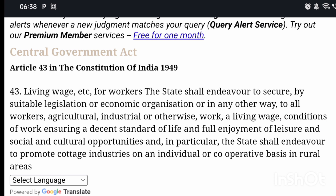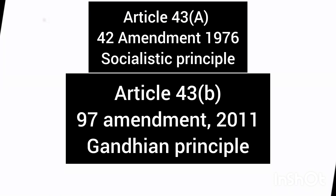1976 में 42nd Amendment में Article 43A को add किया गया, जिसमें कहा गया कि workers का participation बढ़ाना है industry के management में। ये आर्टिकल socialistic principle पे based है। उसके बाद 97th Amendment जो 2011 में हुआ, इसमें Article 43B add किया गया — ये Gandhian principle पे है और इसके अनुसार cooperative societies को promote करना चाहिए।